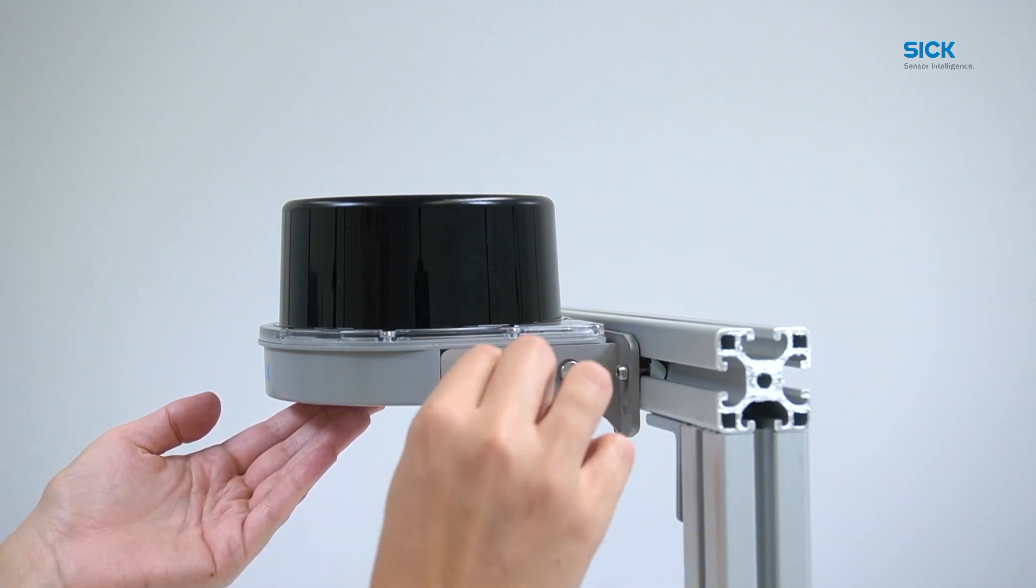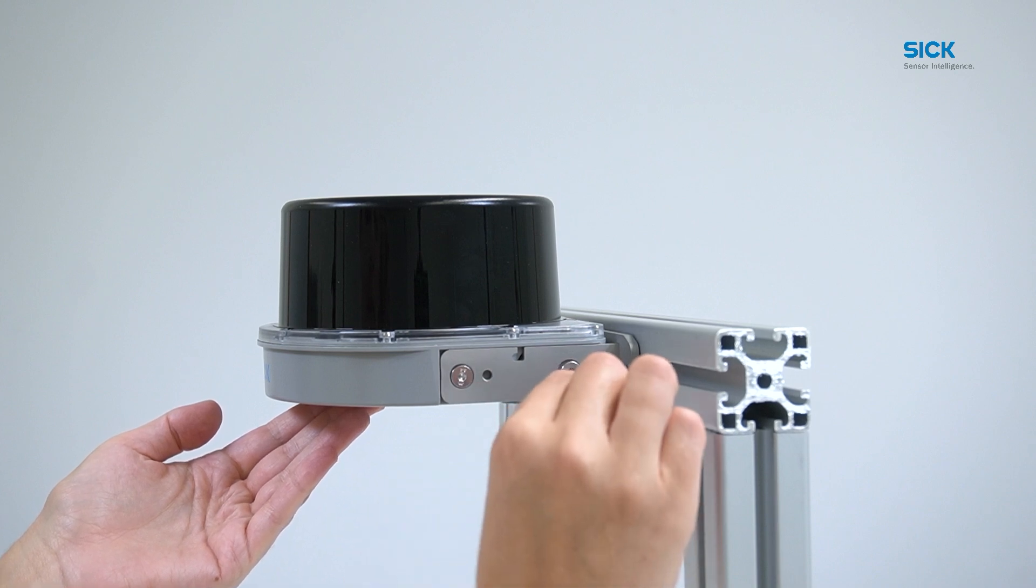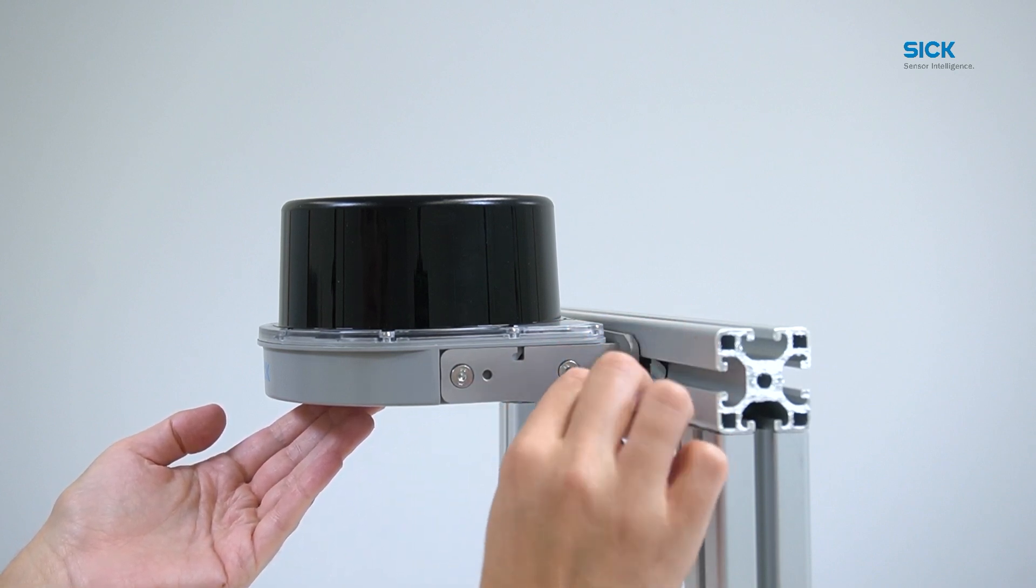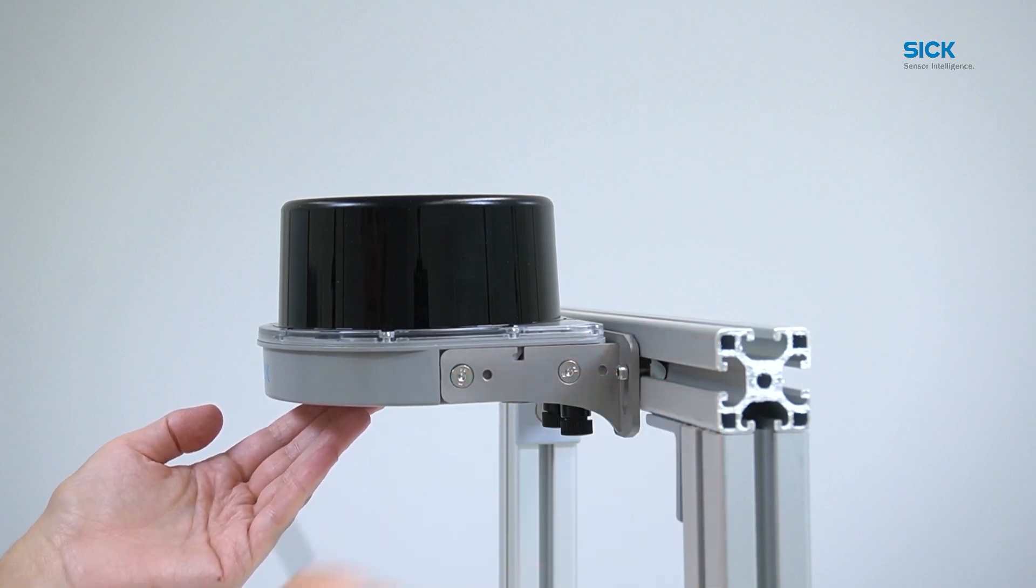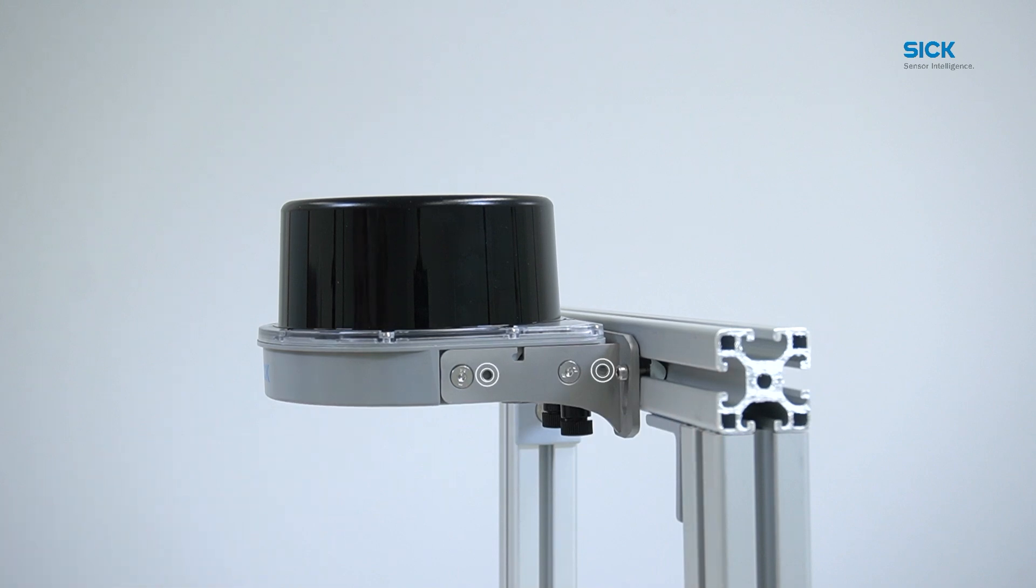It is also important to ensure that the correct mounting holes are used for the sensor. Otherwise, the sensor housing can be damaged. The other holes are used to mount the weather protection hood.